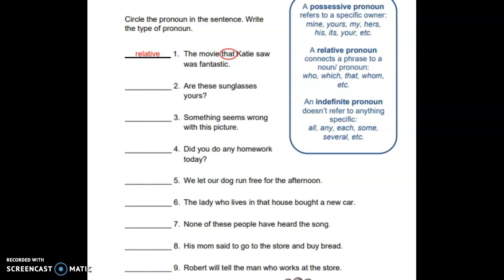A relative pronoun connects a phrase to a noun or pronoun, such as who, which, that, or whom. Then we have indefinite pronouns — they don't really refer to anything specific. Some examples are all, any, each, some, and several.